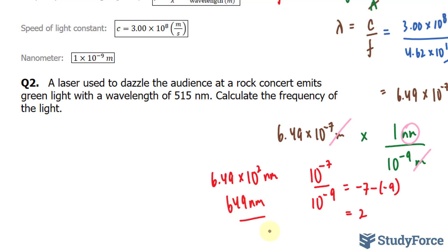In question number 2, we're asked: a laser used to dazzle the audience at a rock concert emits green light with a wavelength of 515 nanometers. So this right here is lambda. Calculate the frequency of the light.